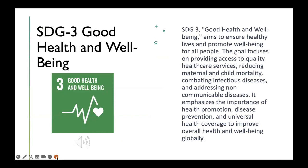SDG number three: Good Health and Well-being focuses on ensuring healthy lives and promoting well-being for all people of all ages. The goal aims to address various health-related challenges and achieve universal health coverage, including access to essential healthcare services, vaccines, medicines, and sanitation facilities. SDG 3 targets the reduction of maternal mortality, child mortality, and the burden of communicable diseases such as HIV and AIDS, malaria, and tuberculosis. It also emphasizes the prevention and treatment of non-communicable diseases such as cardiovascular diseases, cancer, and mental health disorders. This goal encourages the strengthening of healthcare systems, training of healthcare professionals, and improving access to affordable and quality healthcare services.